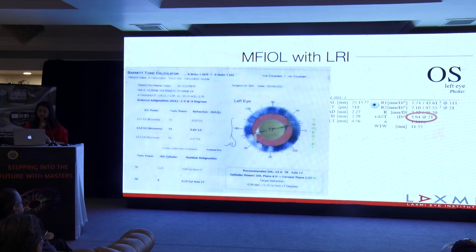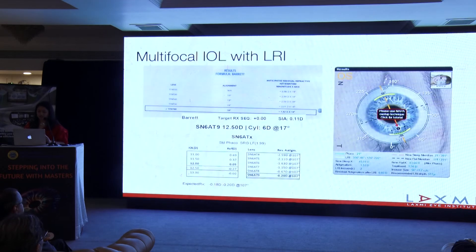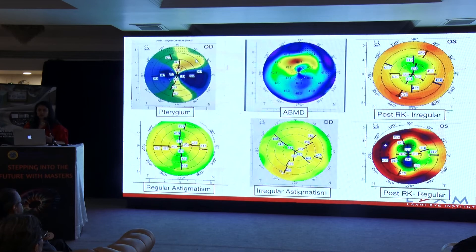This patient had almost 4 diopters of cylinder. Barrett suggested using a T9 which corrects 3.8 at the corneal plane. However, the highest toric in Panoptix available was T6, which would leave a residual of 1.6 diopters — this was then corrected with an LRI, and the patient had excellent results.